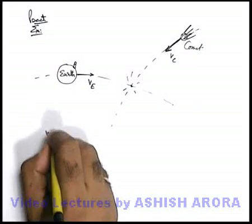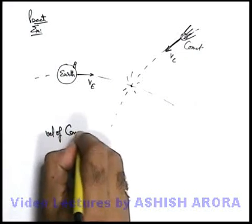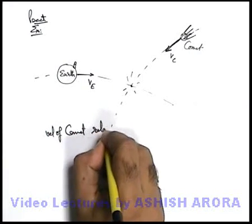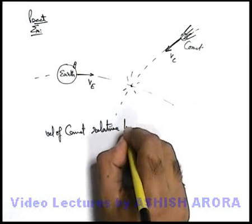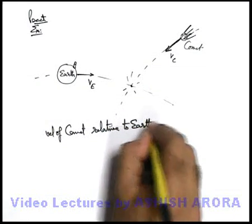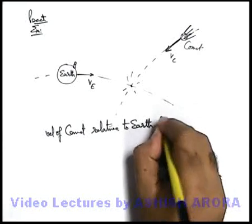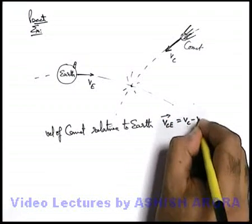Or if we find out the velocity of comet relative to Earth, in this situation velocity of comet relative to Earth will be v_c minus v_e.